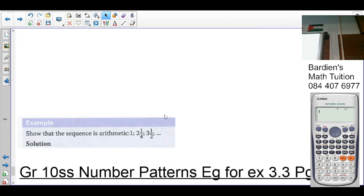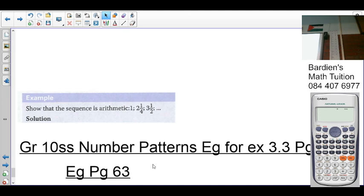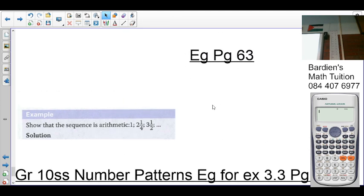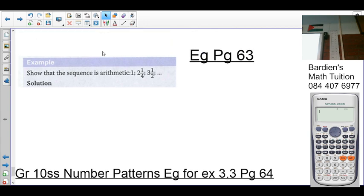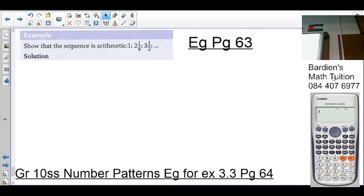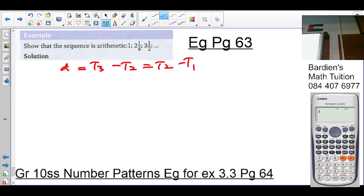I'm looking at the example on page 63, and this example is for exercise 3.3 on page 64. The question says show that the sequence is arithmetic. What makes something arithmetic is that if it has a constant difference, so if T3 minus T2 equals T2 minus T1, then it's arithmetic. If it's not, then it's not arithmetic.